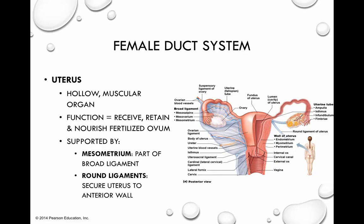Traveling down the oviduct, our next stop along the female duct system is the uterus. The uterus is a hollow and very muscular organ with multiple layers — the majority of which is the myometrium, a very thick muscular wall. The overall function of the uterus is to first receive the fertilized egg, and then retain and nourish it — this will be your site of implantation. As we go through embryonic development, the transition from pre-embryonic to embryonic has everything to do with the structure, vascularization, and nutrients in the uterus.